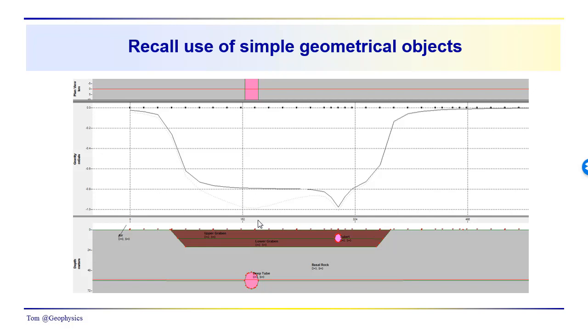And if you remember back to our discussions of simple geometrical objects, you remember that for a cylindrically shaped feature, the anomaly associated with the cylinder will drop off to one half of its maximum value at a distance equal to the depth to the center of that cylindrically shaped feature.